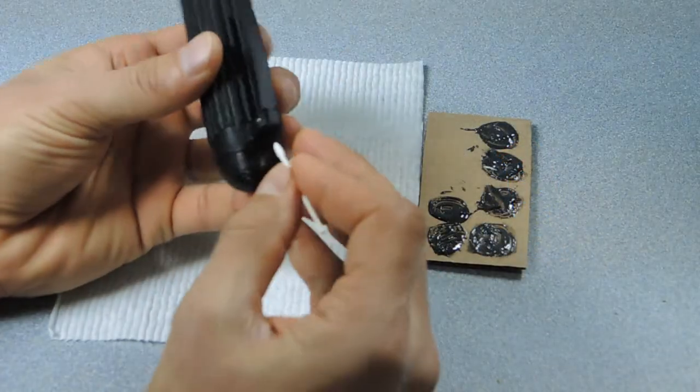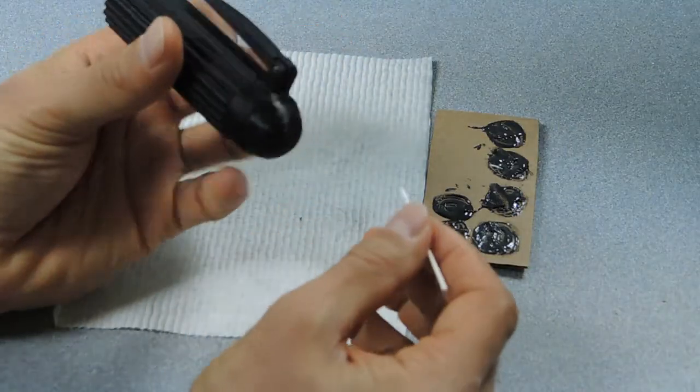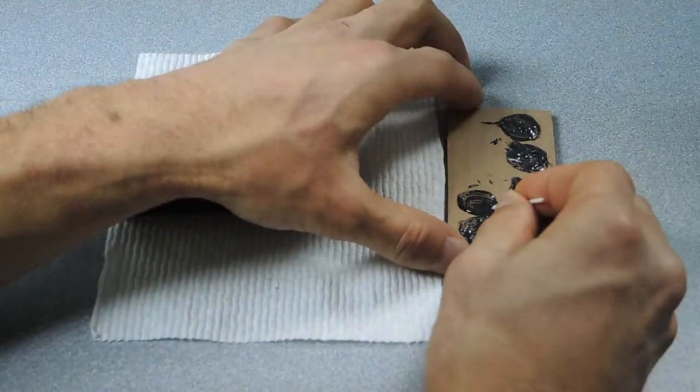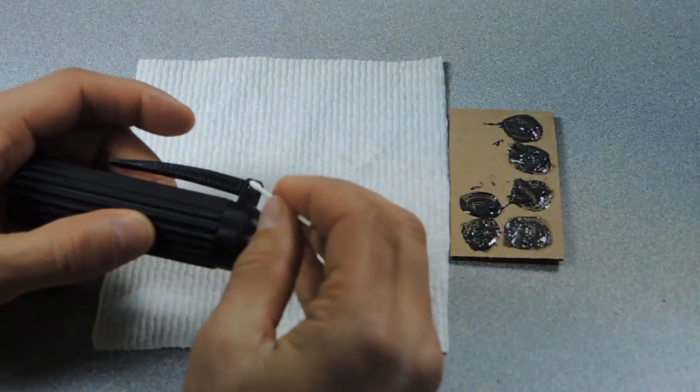Now I'm going to install the clip using the M2 by 8 dowel pin. Once I get that set to the right depth I add a little bit of epoxy to each side being careful not to get any epoxy on the clip and making sure the clip can still pivot.